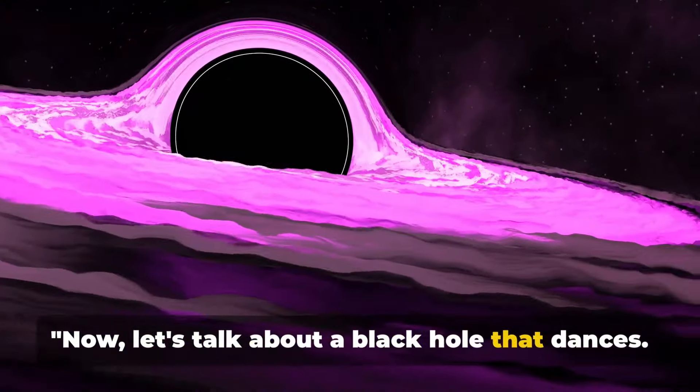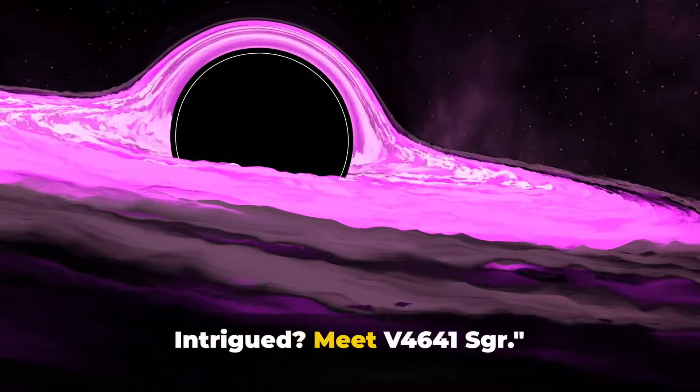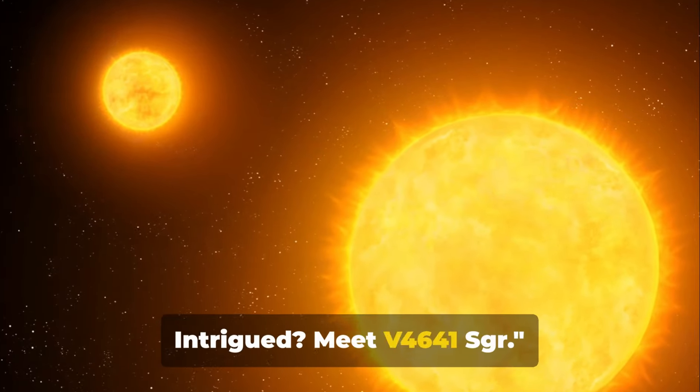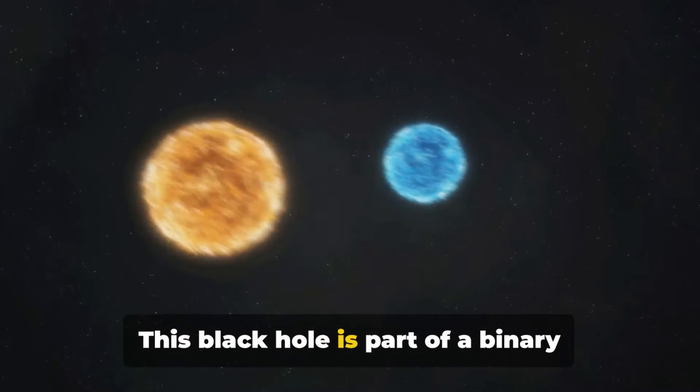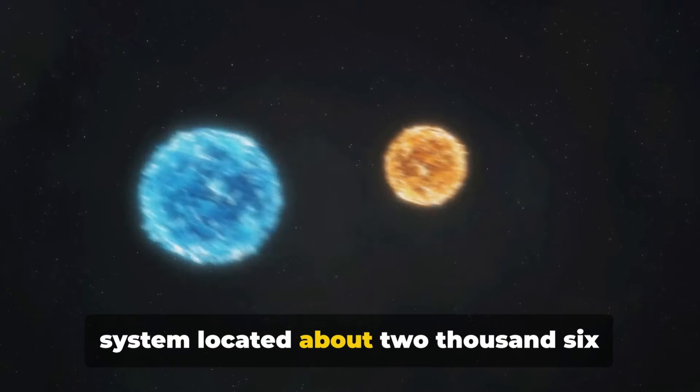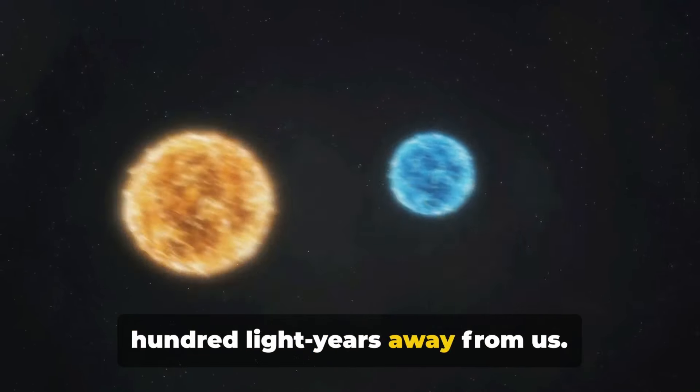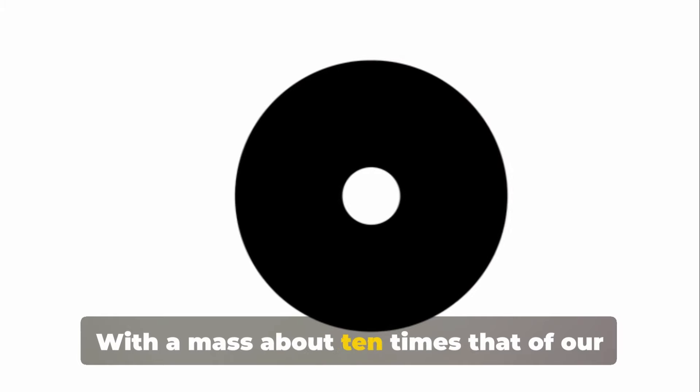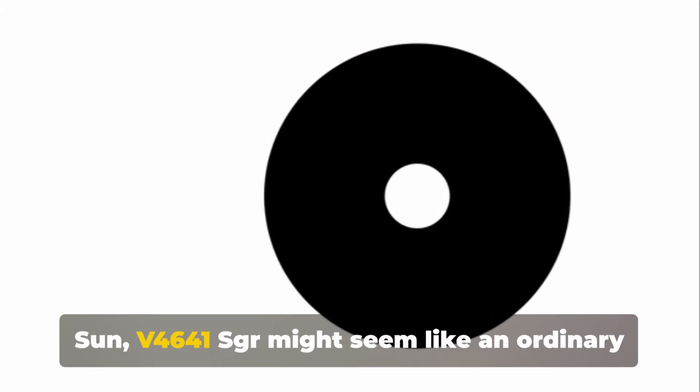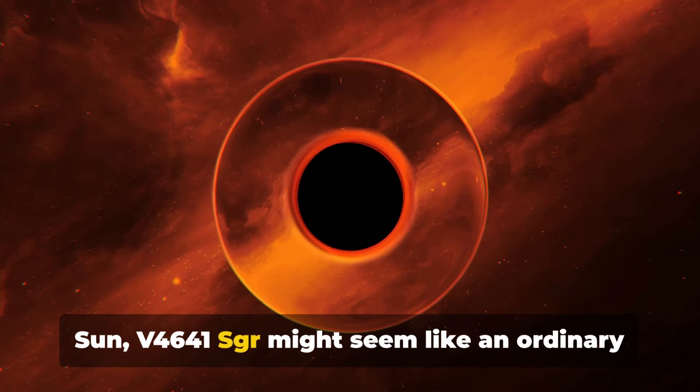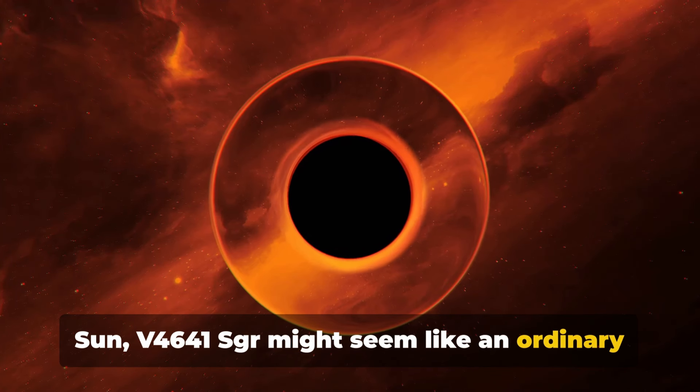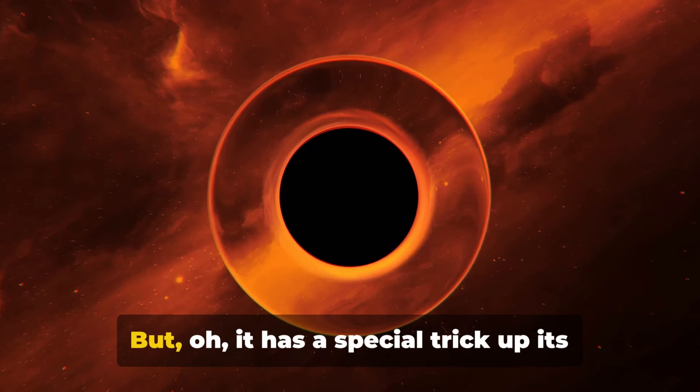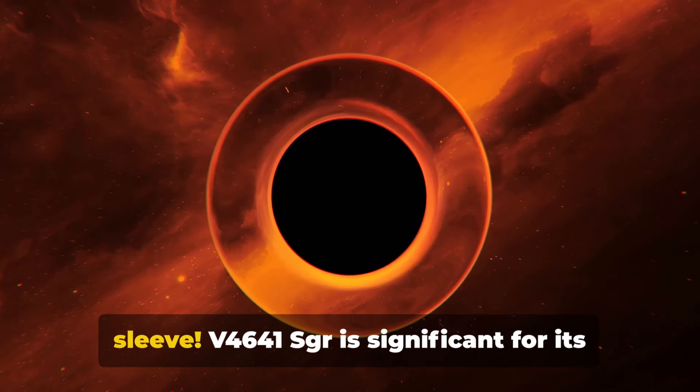Now let's talk about a black hole that dances. Intrigued? Meet V4641 Sighar. This black hole is part of a binary system located about 2,600 light-years away from us. With a mass about 10 times that of our sun, V4641 Sighar might seem like an ordinary black hole at first glance, but it has a special trick up its sleeve.